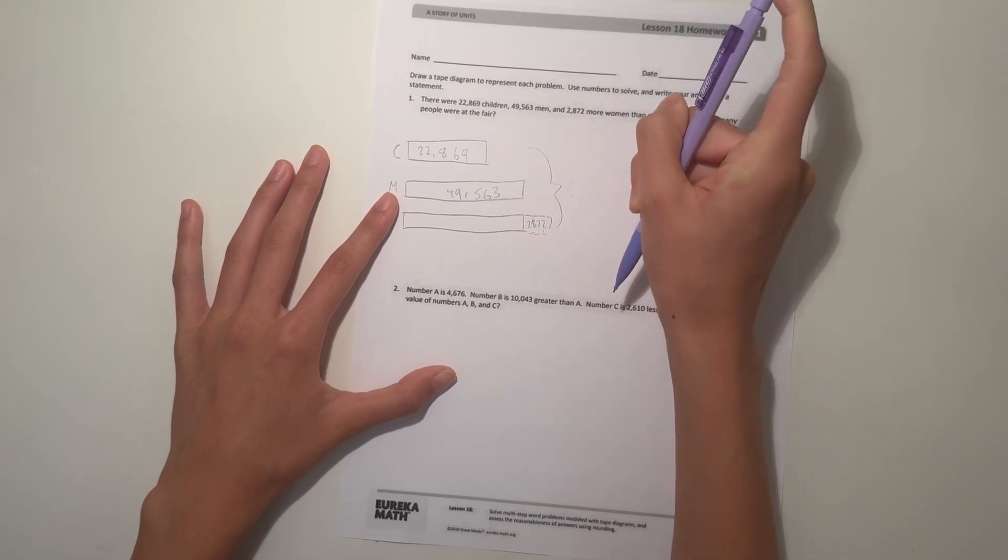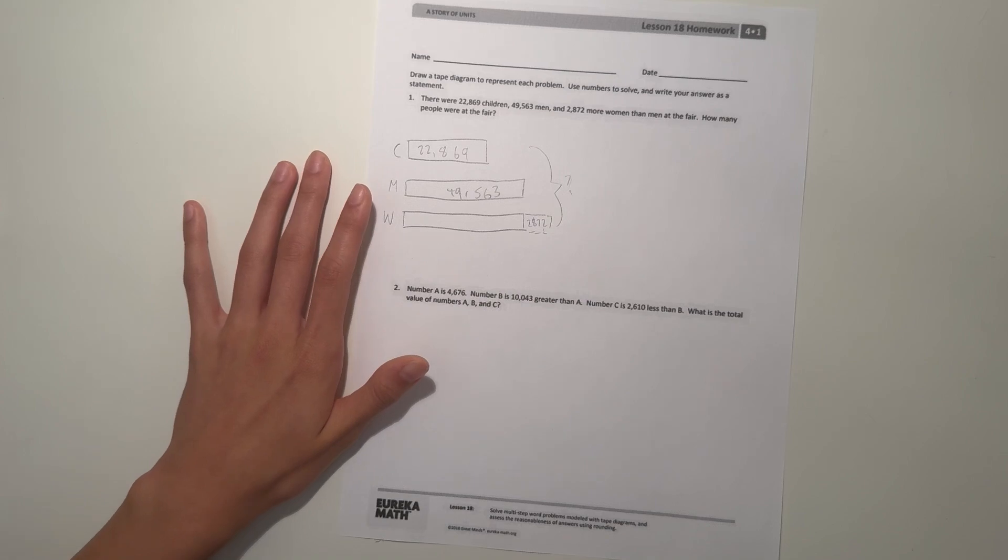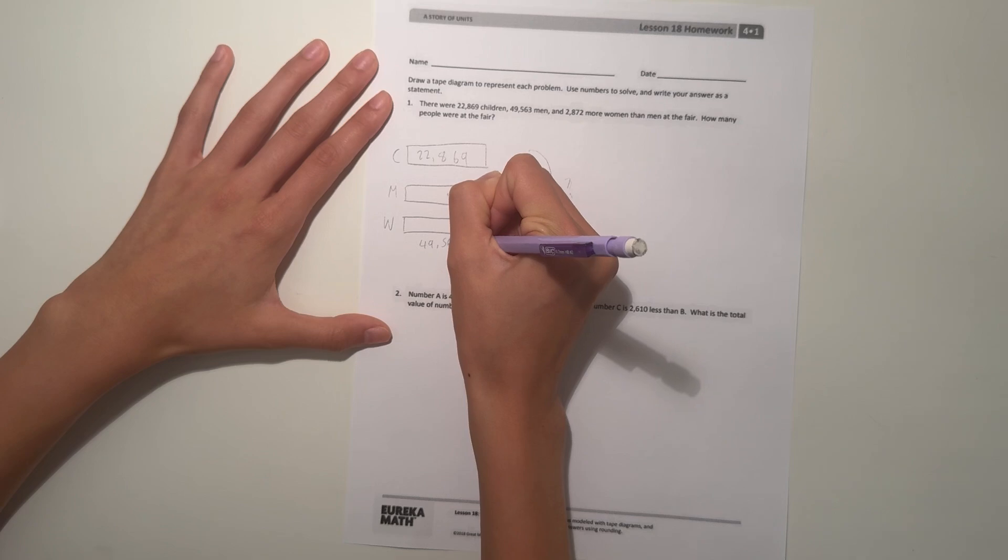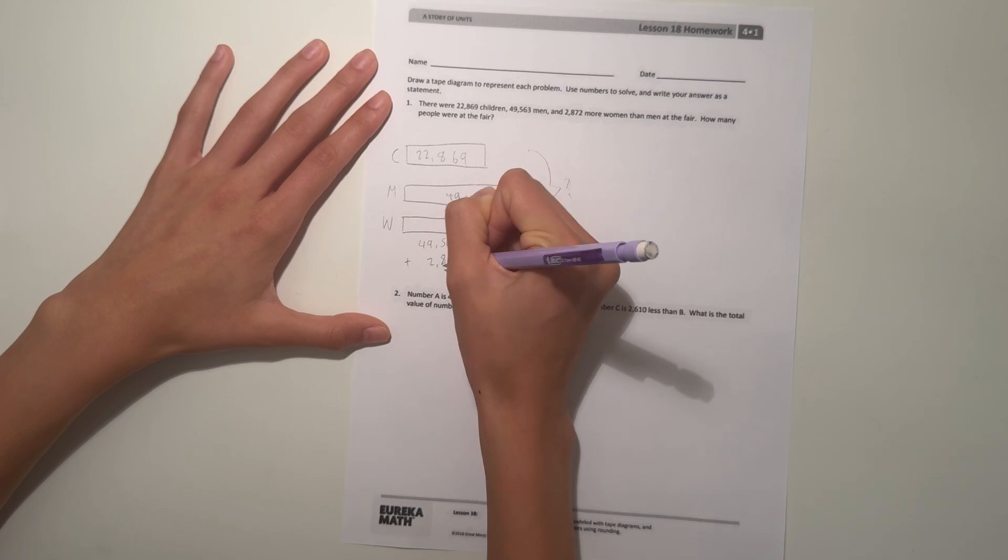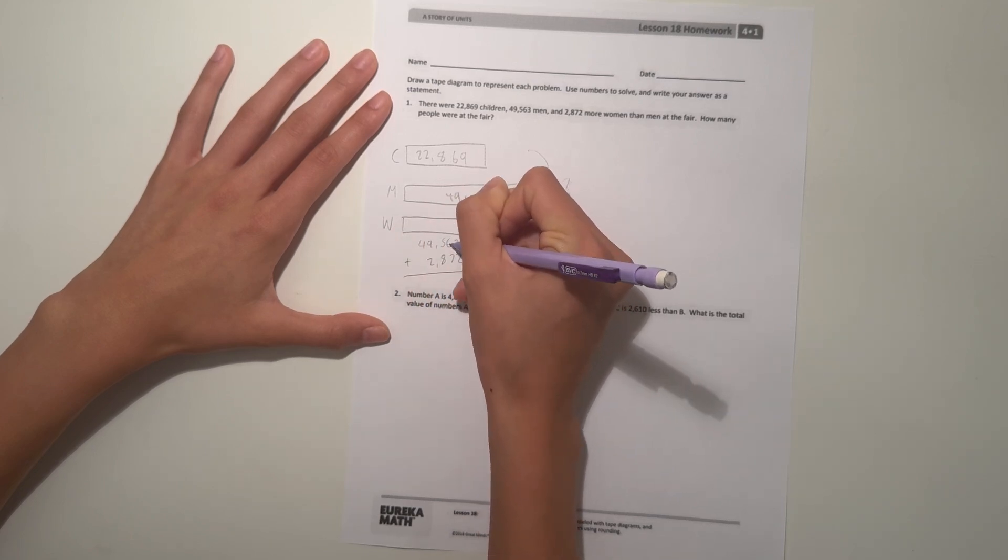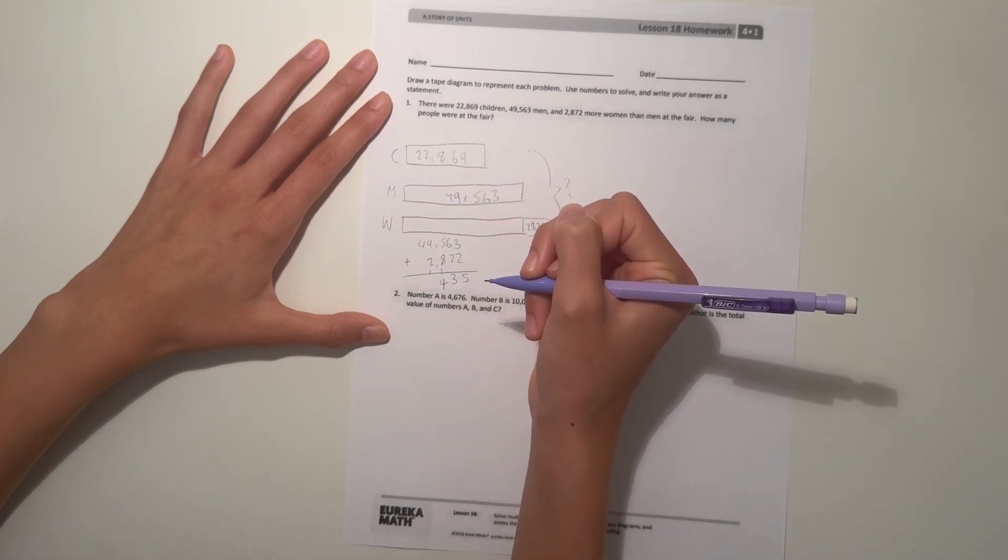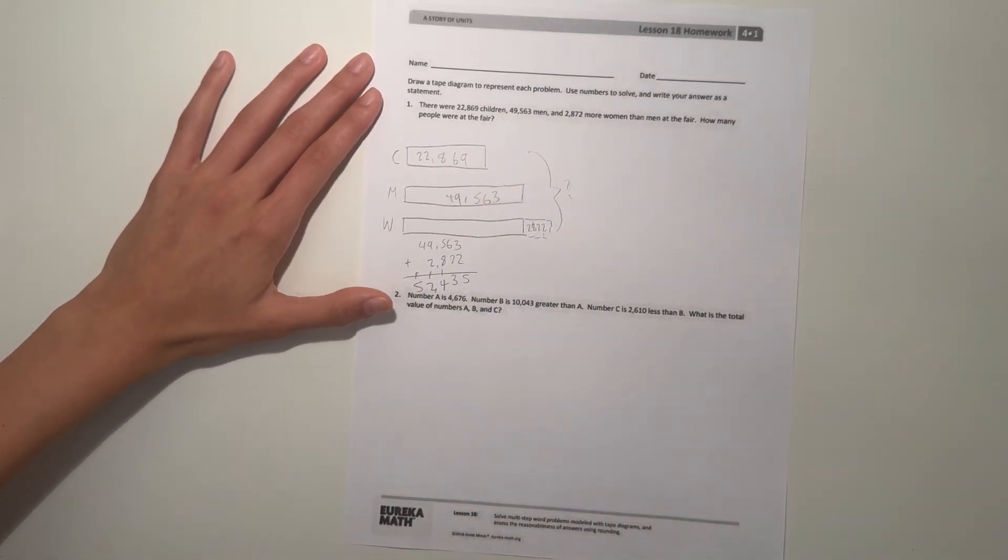How many people were at the fair altogether? First, let's find how many women there are. We know there's 49,563 men, so then add 2,872 more women. 3 plus 2 is 5, 6 plus 7 is 13, 5 plus 8 is 13 plus 1 is 14, 9 plus 2 is 11 plus 1 is 12, and 4 plus 1 is 5. So there's 52,435 women.